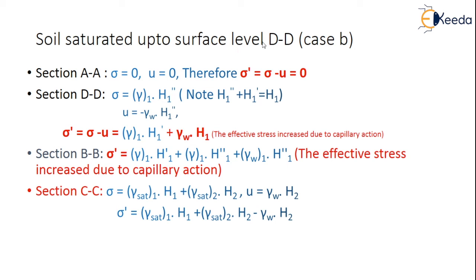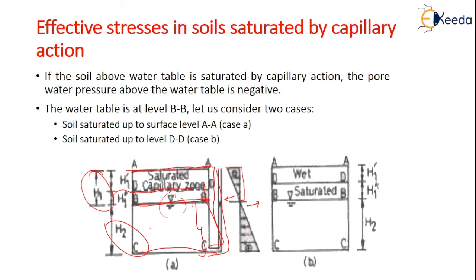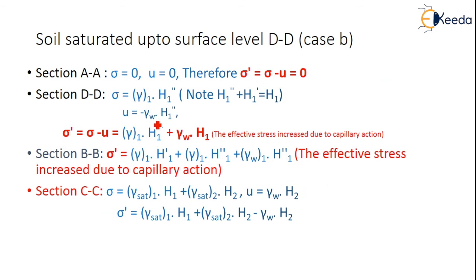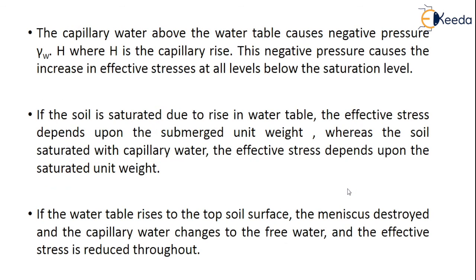Case 2 — soil saturated only up to level DD. At surface AA: sigma = 0, u = 0, sigma' = 0. At section DD: sigma = gamma1·h1'', pore water pressure is negative due to capillary action, so effective stress is again increased. Similarly at section BB there is an increase due to capillary action. The capillary water above the water table always causes negative pore pressure of gamma_w·h (where h is the capillary rise), which causes an increase in effective stress at all layers below the saturation level.